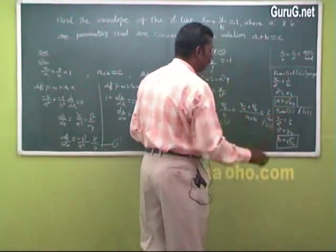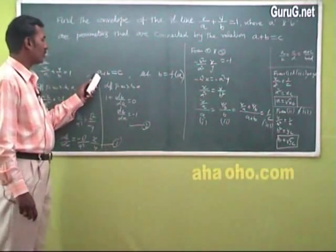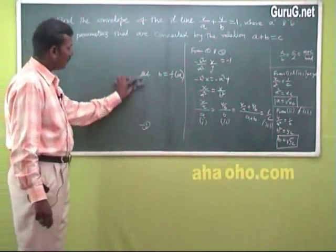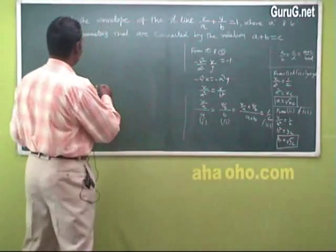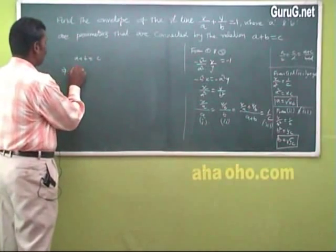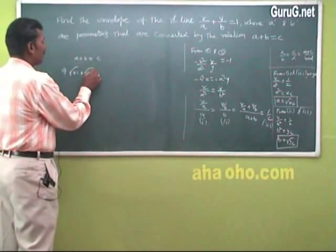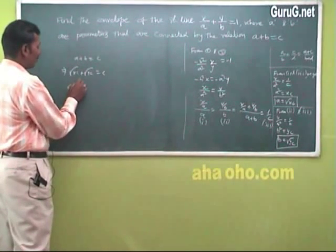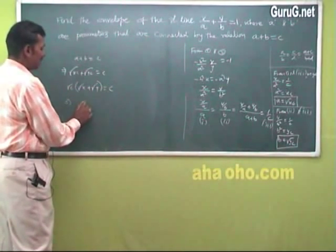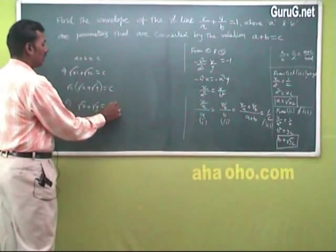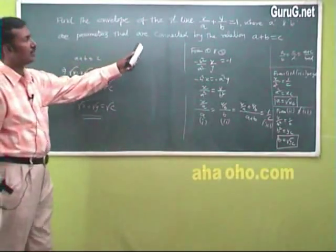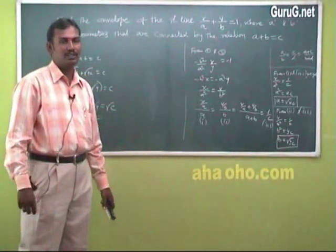Substitute a and b into a + b = c to eliminate the parameters. So √(xc) + √(yc) = c. Taking √c outside: √x + √y = √c. This is the equation of the envelope of the family of straight lines x/a + y/b = 1.